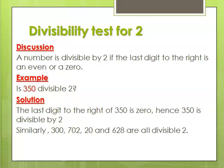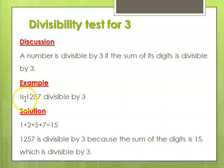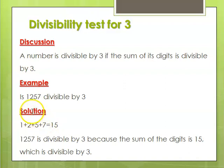A number is divisible by 3 if the sum of its digits is divisible by 3. So if you sum the digits and the number you obtain is a multiple of 3, then that particular number is divisible by 3. A good example is 1,257. Adding the digits, we have 1 plus 2 plus 5 plus 7, which gives us 15. Clearly, 15 is a multiple of 3, and therefore 1,257 is divisible by 3.